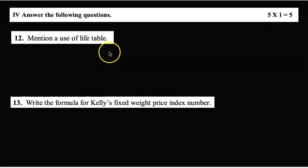Fourth main: answer the following questions, 5 × 1 = 5. The twelfth question: mention a use of life table. There are about four to five uses of the life table, so you can write one of the uses. It is used to estimate the future population.